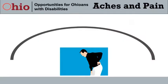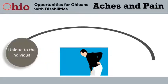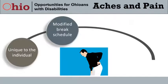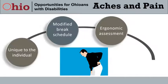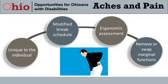Joint pain and body aches can also be a long-term effect, with symptoms unique to each individual. Accommodations could include a modified break schedule to permit rest from physical activity or sustained sitting, providing an ergonomic assessment of the workstation to minimize symptoms and improve the employee's comfort during work, and removing or swapping marginal functions that may exacerbate the pain.